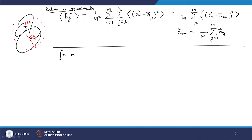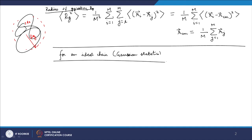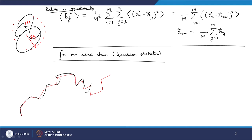An ideal chain is one that follows Gaussian statistics, and all the chain models we have discussed so far are actually ideal. We can go from a discrete to a continuous representation of a chain. If we have a freely jointed chain, we can represent it for a large number of segments as a continuous line passing through it.